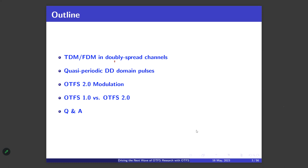I'll explain why TDM and FDM do not work in doubly spread channels. That leads to finding a good waveform, which naturally leads to quasi-periodic DD domain pulses — the carrier waveforms for OTFS 2.0 modulation. We'll compare 1.0 and 2.0, then have Q&A.